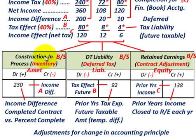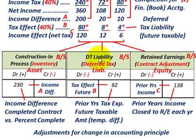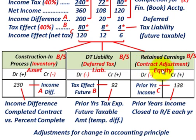To record this change, we need to set up three accounts: Construction in Process (an inventory/asset account), Deferred Tax Liability (a liability account), and Retained Earnings (an equity account for the contract adjustment). The deferred tax liability arises because the completed contract method recognizes less tax than the percentage of completion method we're switching to.